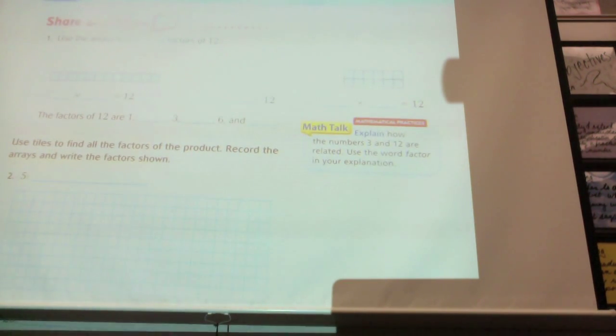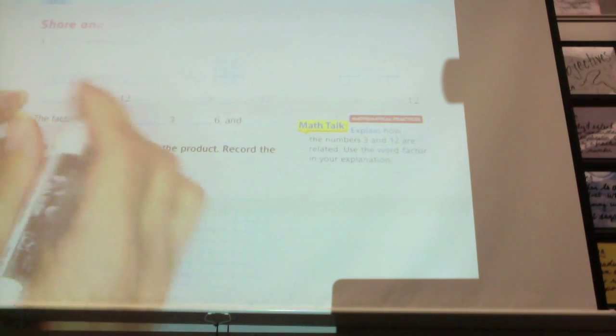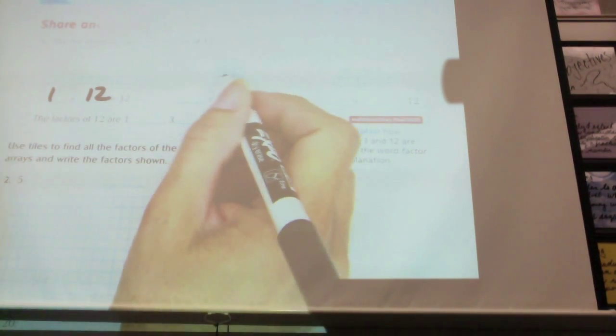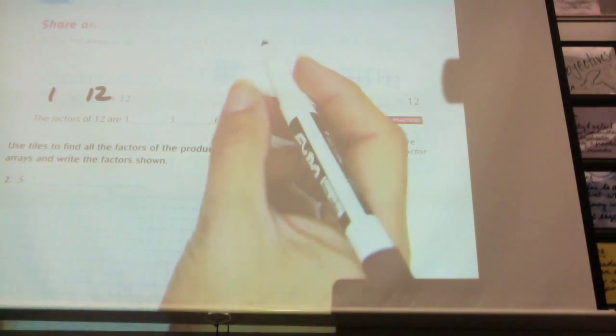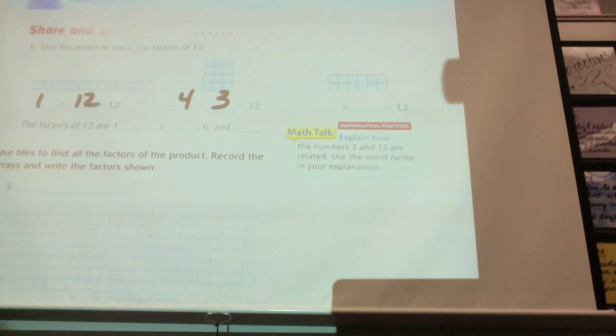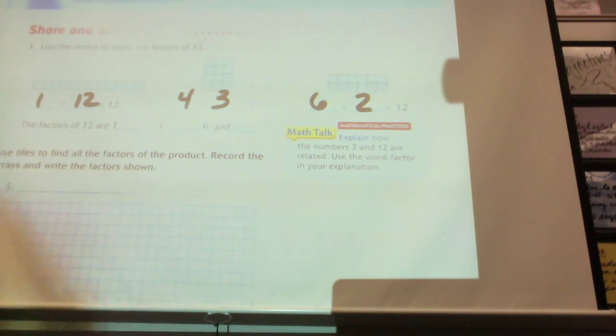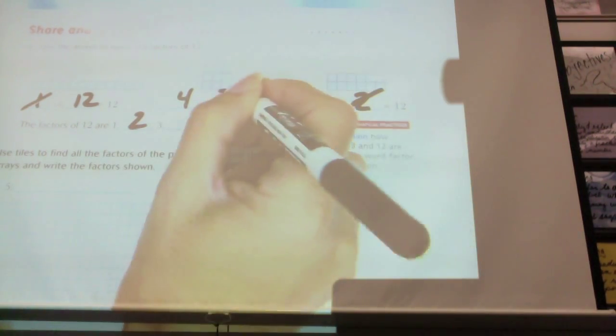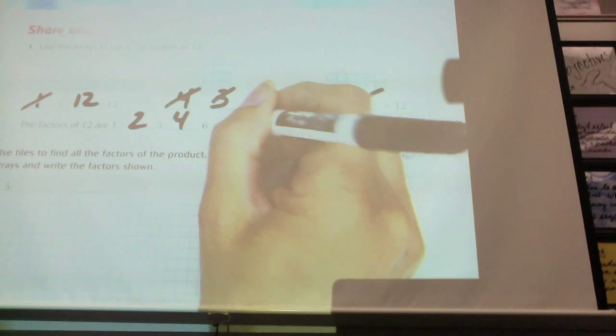Use the arrays to name all the factors of 12. So, what is the first array? Look at the first array. You can look up here or you can look in your book. What does the first array cost? 1 times 12. What is the second array? I want you to think and count first. What is the second array? 4 times 3. And look at the third one. What is the array? 6 times 2. So, our factors are, we've done 1, what's the next one? 2. They've done 3. What's the next one? 4. And they've done 6. What's the last one? 12. Go ahead and write them down.